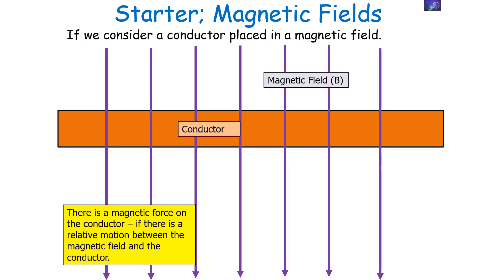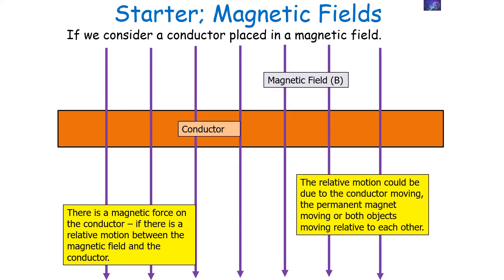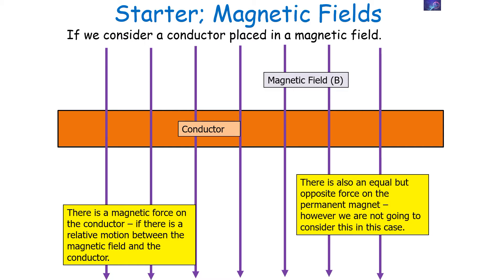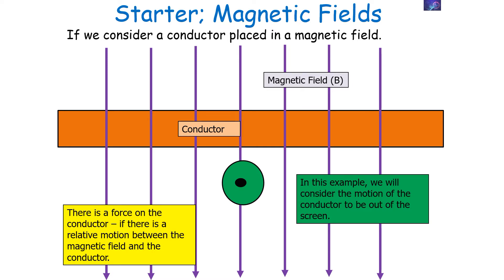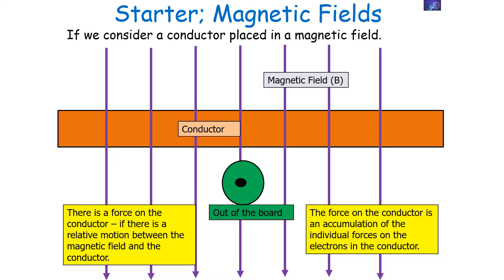If we consider a conductor placed in a magnetic field, there's a magnetic force on the conductor if there's relative motion between the magnetic field and the conductor. The relative motion could be the conductor moving, it could be the permanent magnet moving, or it could be both objects moving relative to each other. In this example, we'll consider the motion of the conductor to be out of the screen. The force on the conductor is an accumulation of the individual forces on the electrons, the charged particles, moving through this conductor.